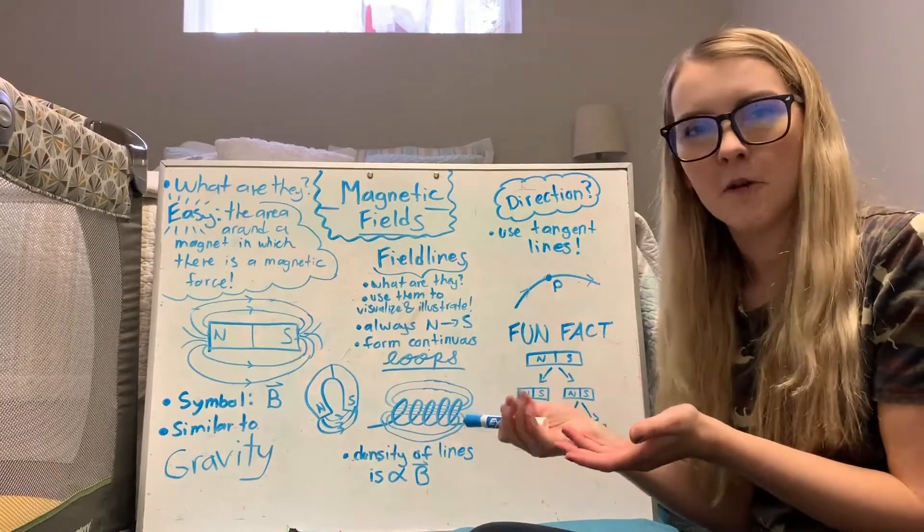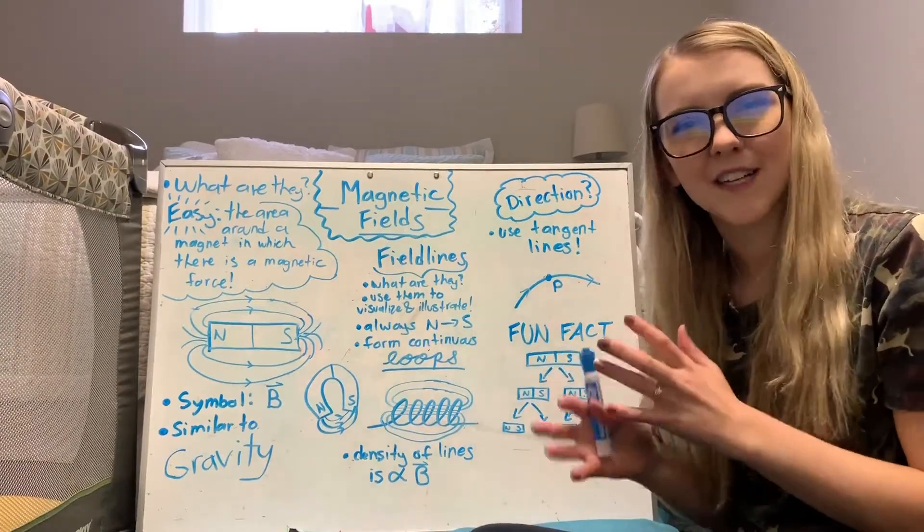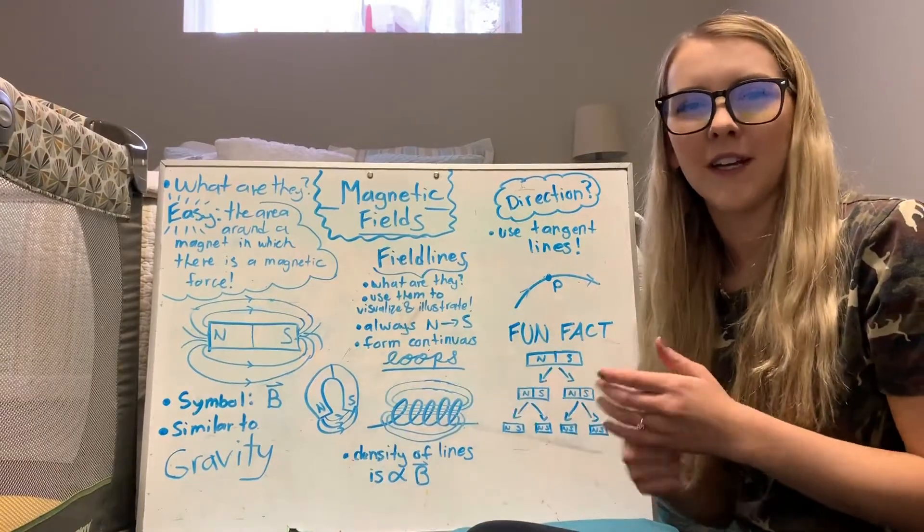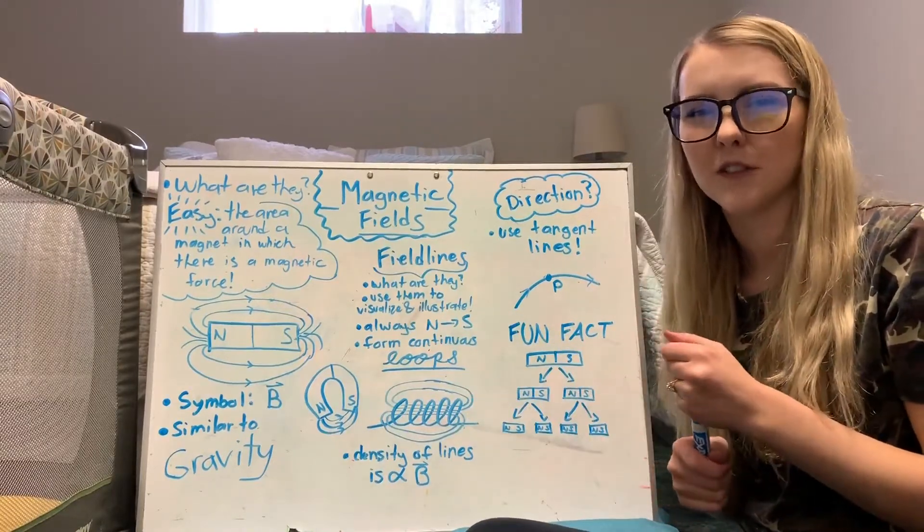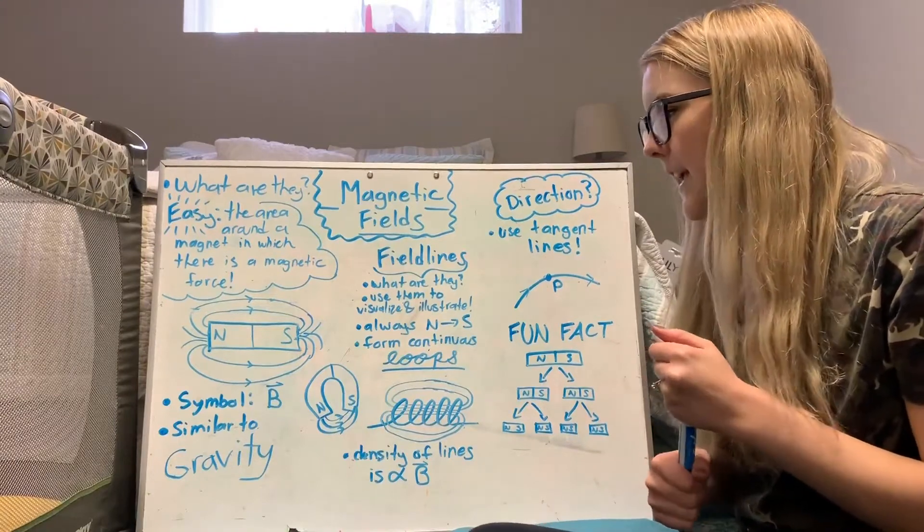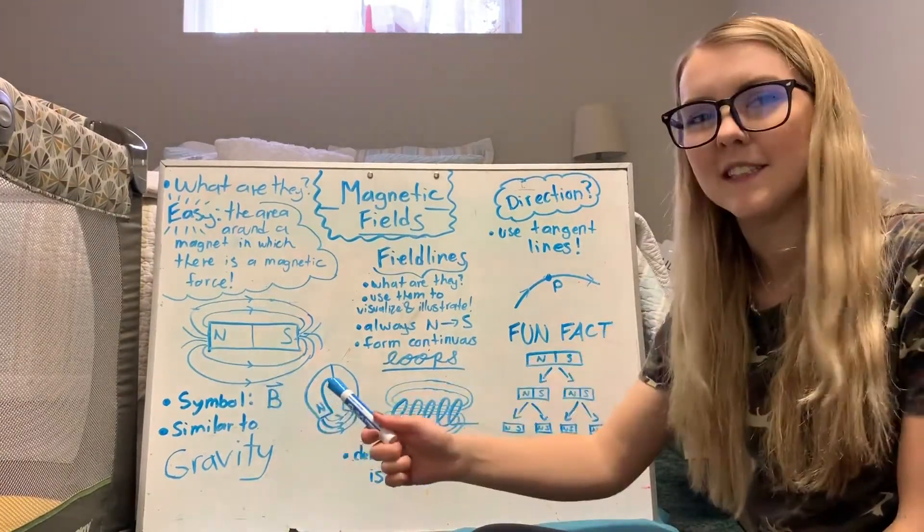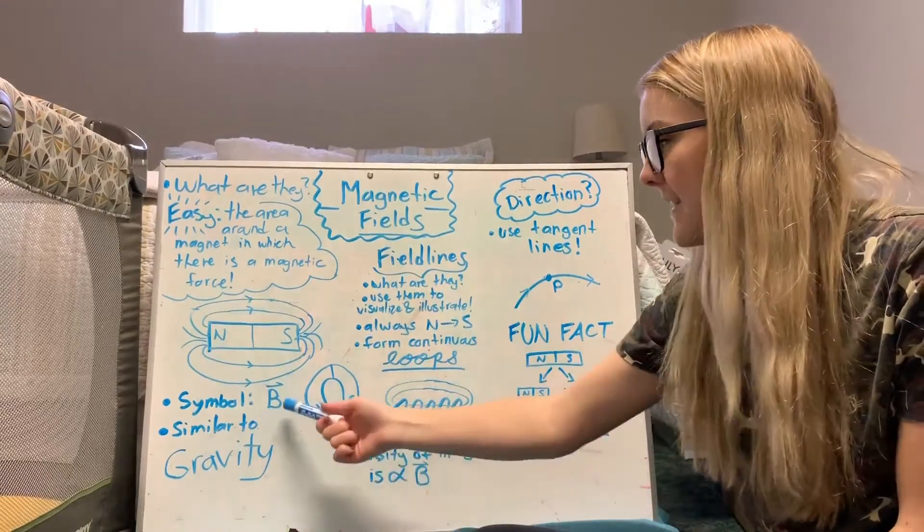So it's very similar and there's electric fields as well which are kind of similar, but gravity is the most intuitive one. So that's what I like to think about in order to really understand magnetic fields. And the mathematical symbol is B with this little vector symbol because that indicates it has a direction. So that's important.